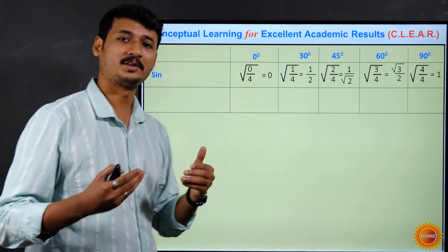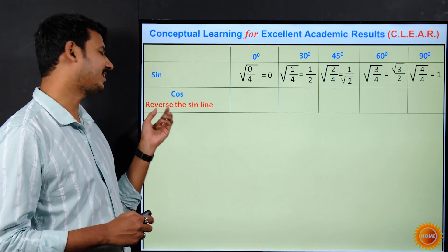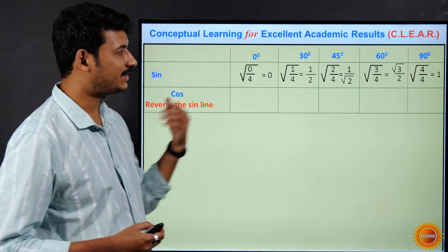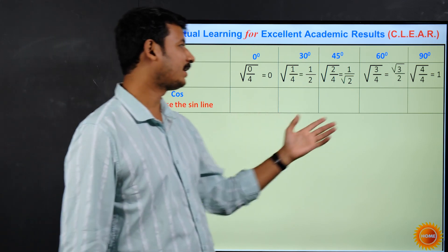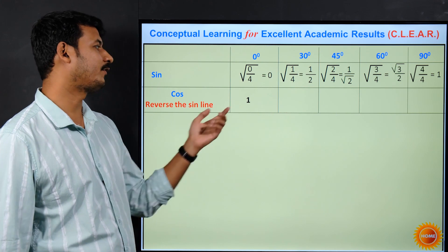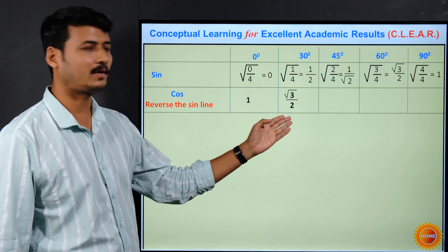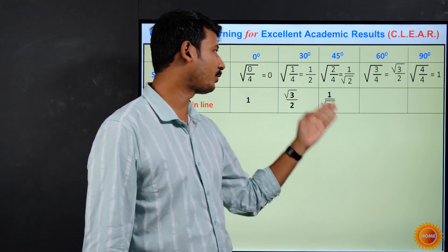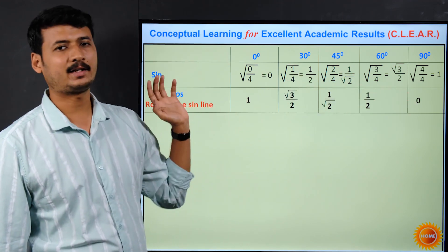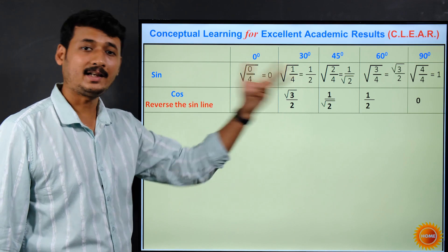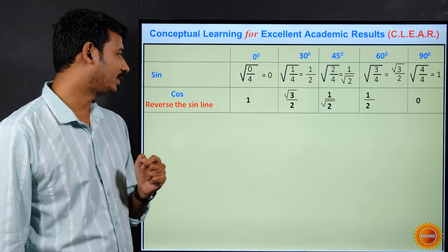Getting cos is even simpler — just write the sine values in reverse order. So cos 0° = 1, cos 30° = root3/2, cos 45° = 1/root2, cos 60° = 1/2, and cos 90° = 0. You simply reverse the sine line to get the cos values.